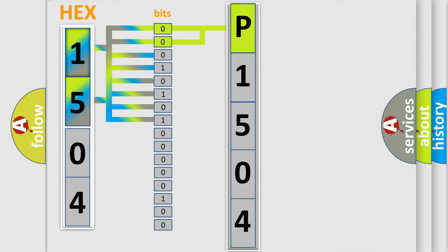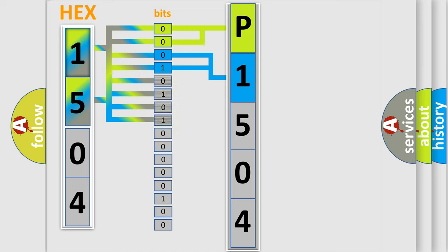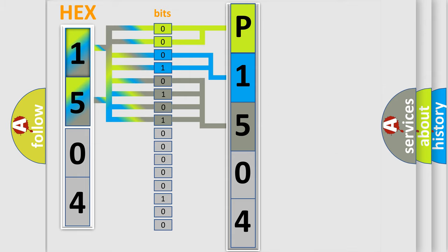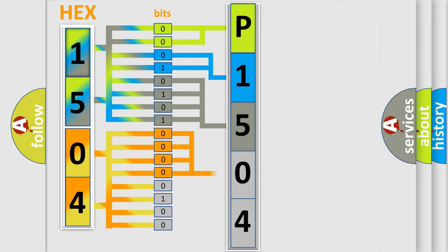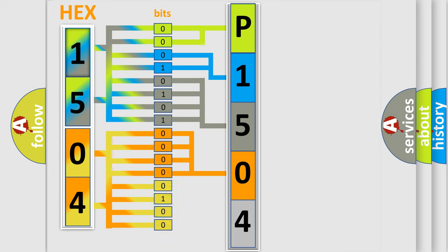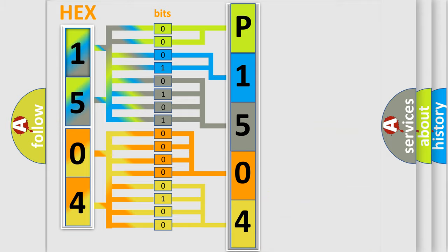The next two bits determine the second character. The last four bits of the first byte define the third character of the code. The second byte is composed of a combination of eight bits. The first four bits determine the fourth character of the code, and the combination of the last four bits defines the fifth character. A single byte conceals 256 possible combinations.